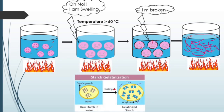A small representation of starch gelatinization: this is the intact starch granule with amylose and amylopectin. When we provide water and apply heat, the disintegration happens — the amylose bleaches out and water molecules come inside the granule.